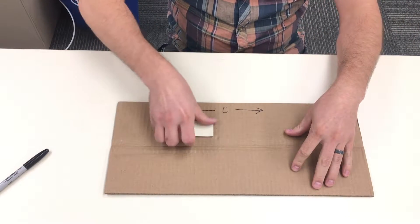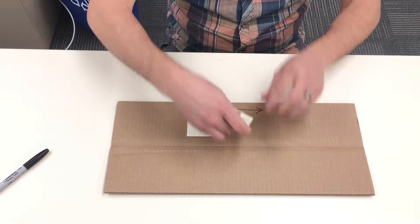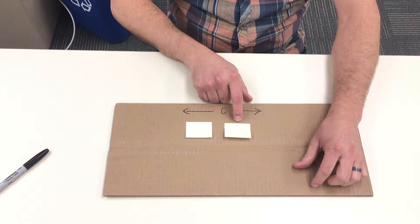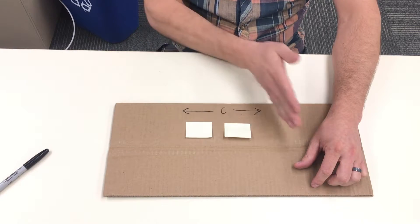So columns go from left to right. If I add these two sticky notes right here, I now have two columns, right? So you count the columns from left to right.